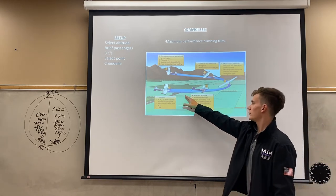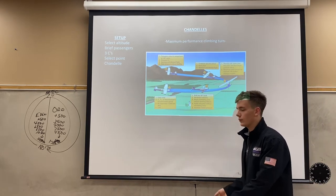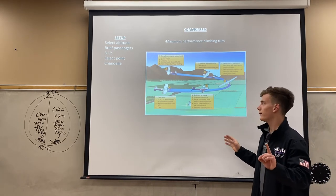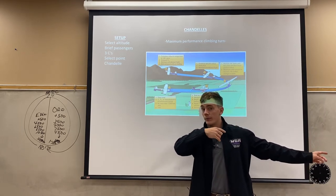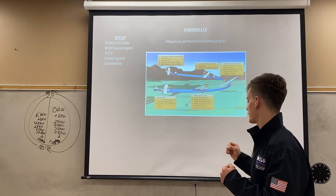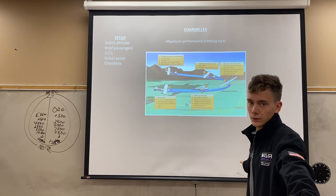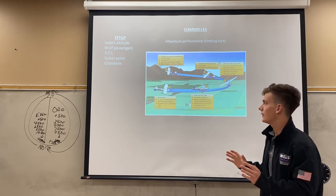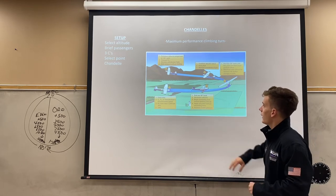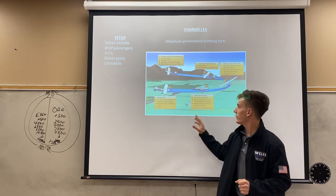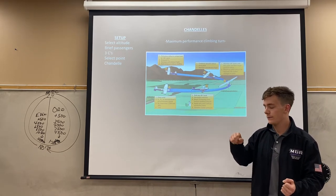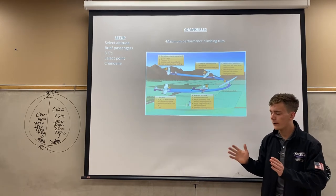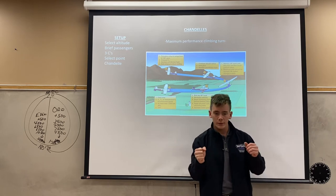If the stall horn is going off the whole time, that is actually a good place to hold it. That's the recommended standard — I believe it's in the commercial ACS or the Airplane Flying Handbook. You want the stall horn going off because that means you have developed maximum performance if the first part was done correctly. So: first 90 degrees — constant bank, increasing pitch. Then right when you get to your 90-degree point, begin decreasing bank very gradually as you roll out to your 180-degree point. Decrease it all at once and you'll overshoot.